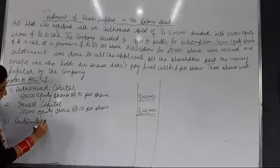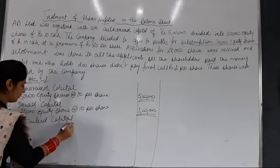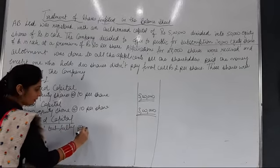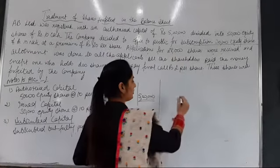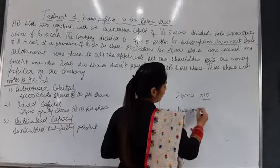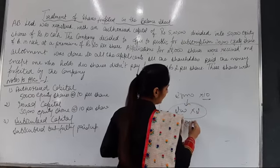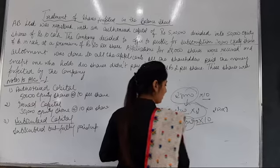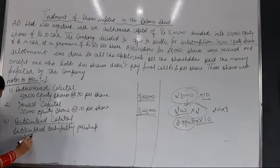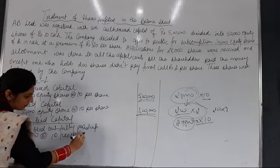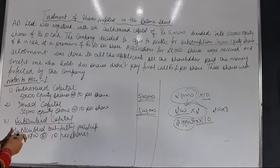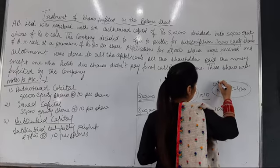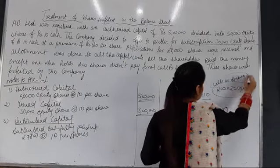Next is subscribed capital. In subscribed capital we have two headings: subscribed and fully paid up, and subscribed but not fully paid up. Applications received were 28,000. Out of 28,000 shareholders, 27,800 have paid rupees 10 per share fully — so subscribed and fully paid up is 27,800 shares at the rate of rupees 10. For subscribed but not fully paid up, we had 200 shares where calls were in arrears — the shareholder had not yet paid the final call amount.